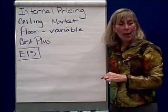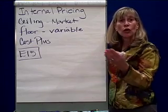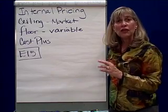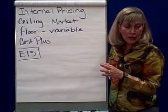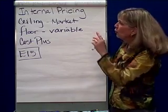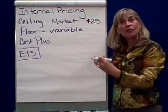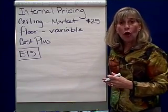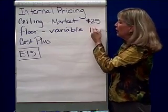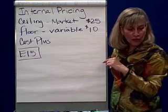Let's take a look at Exercise 15 to see if this makes sense. In Exercise 15, we are Patch Watch, and we have a store. We're going to transfer these factory-second watches from one store to another and figure out what to do. The unit price if we sell these watches to outside retailers is $25 — that's the market price, so the market price is $25, which is the maximum transfer price. The variable cost per unit is $10, so the minimum transfer price would be $10.